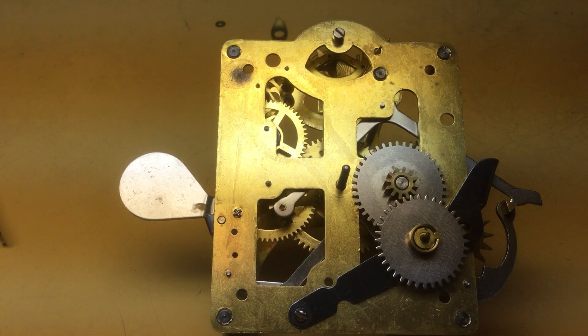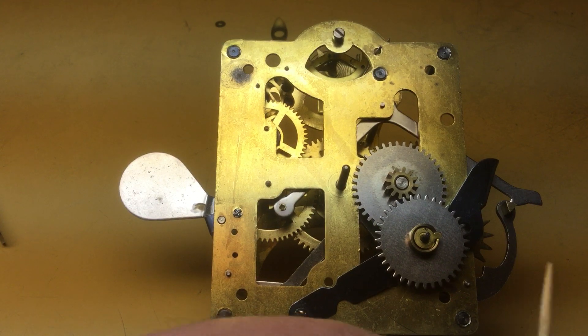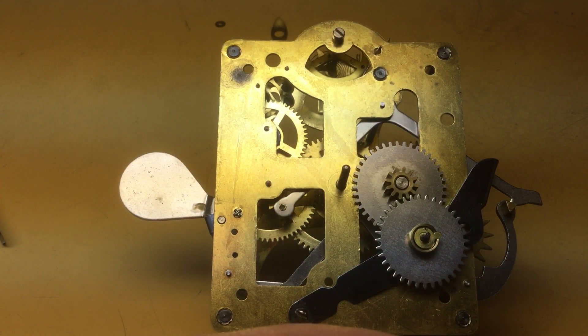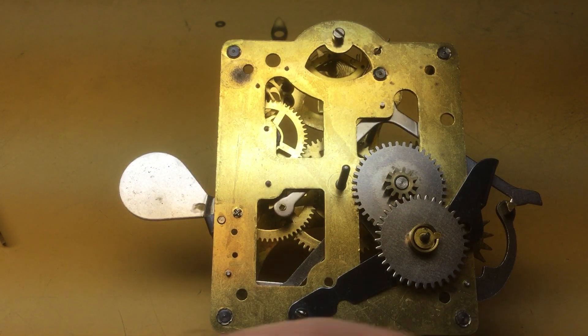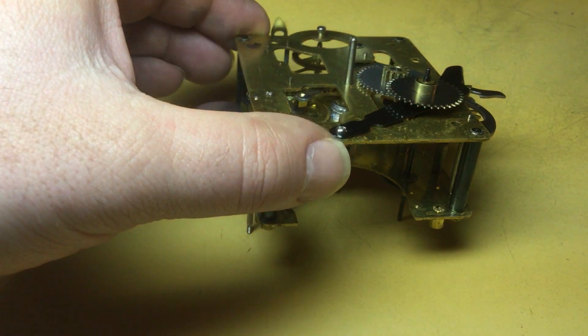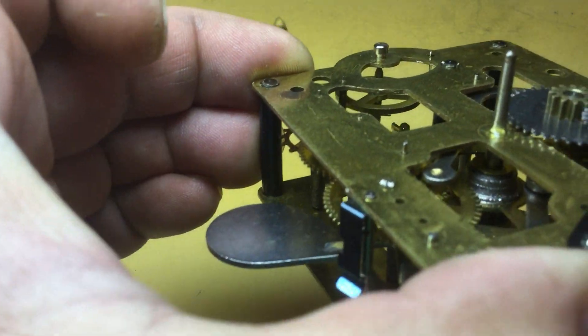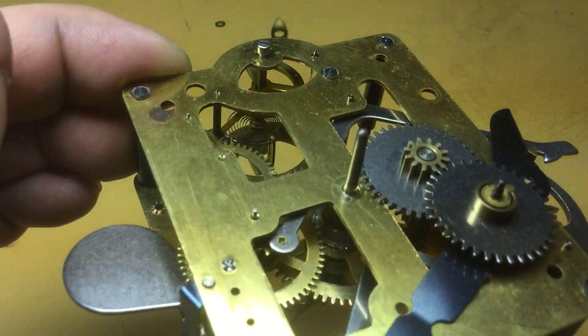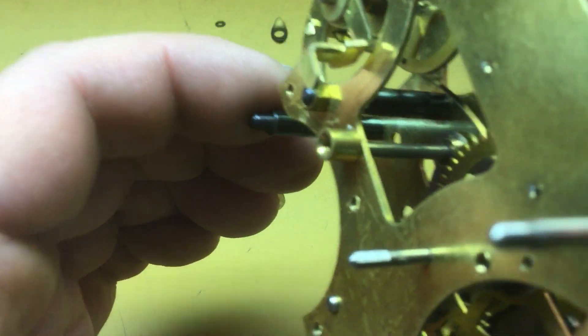And I'm going to select an end of the toothpick that looks fairly decent, doesn't look too bad as far as hairy splintery wood. I'm going to put a little drop of oil on the toothpick and knock the movement over. And I'm going to touch the pivots.